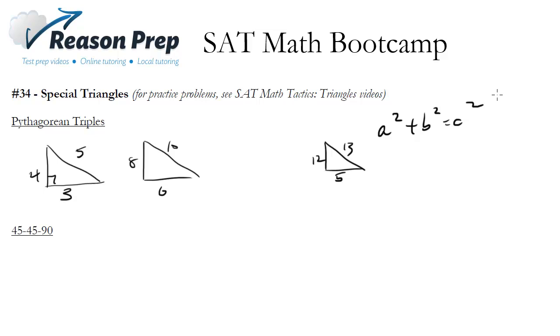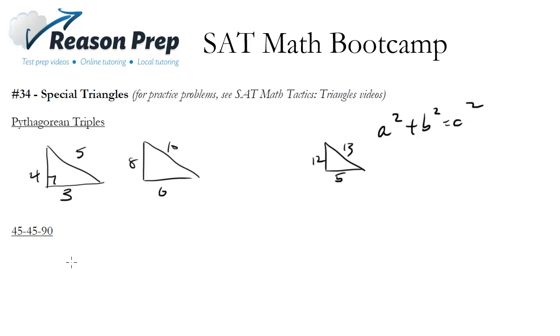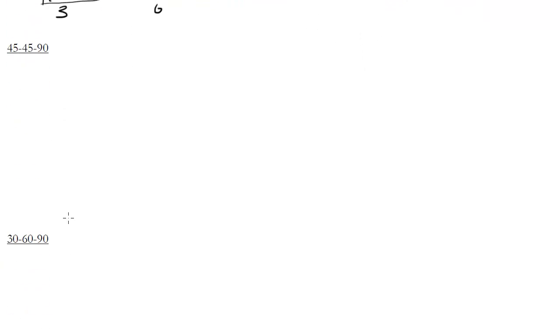There are other triangles though that you'll only be given one side and some angle information. So how do you find the other sides? Well, you use the special right triangles. That's the best way to do it.